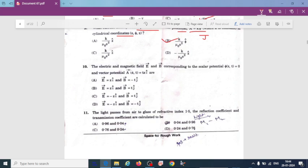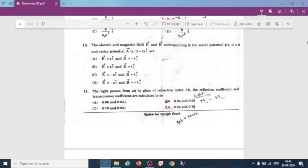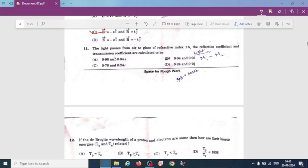Electric field and magnetic field E and B corresponding to scalar potential and vector potential A are - here already I have solved in the previous video, just you can go to those videos. So here the option C is correct for a given scalar and vector potential. The light passes from air to glass of refractive index 1.5, the reflection coefficient and transmission coefficients are calculated to be. Here the option B is correct.